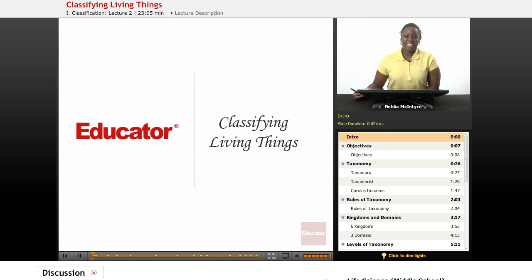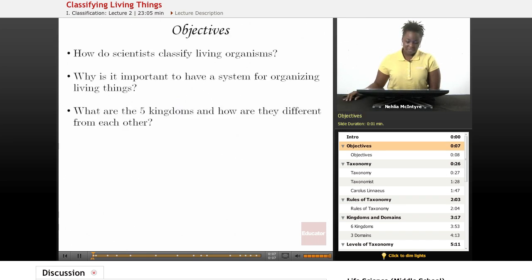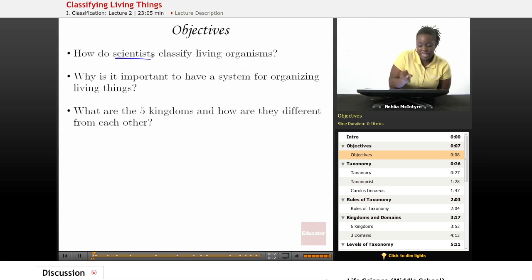Welcome back to Educator.com. This is the Life Science course, and today's lesson is on Classifying Living Things. Our objectives for this lesson will be: number one, how do scientists classify living organisms? And why is it important to have a system for organizing living things? And number three, what are the five kingdoms, and how are they different from each other?